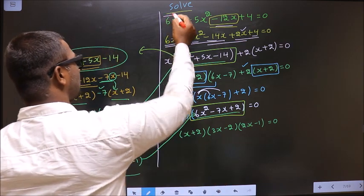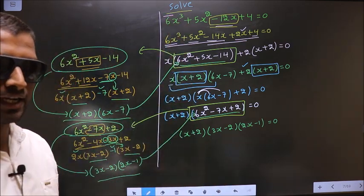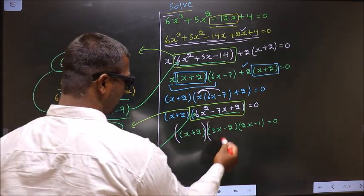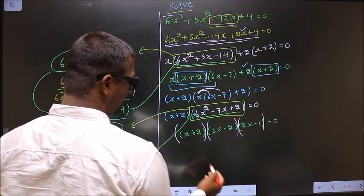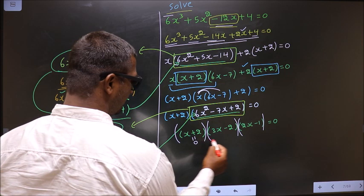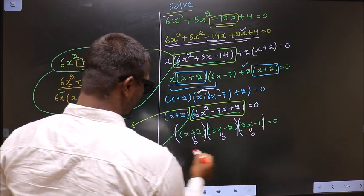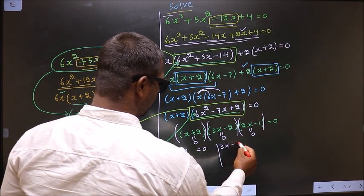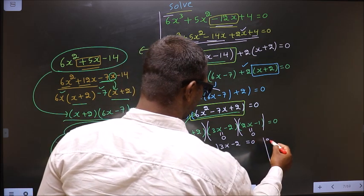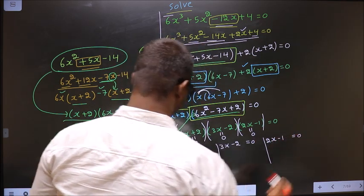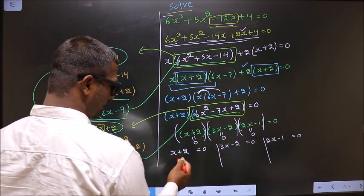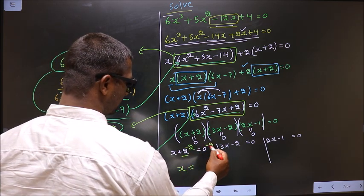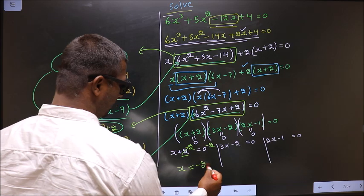They told us to solve, so we should get the values for x. I got a product of brackets equal to 0. To get the values for x, I should equate each bracket to 0: x + 2 = 0, 3x - 2 = 0, and 2x - 1 = 0. For x + 2 = 0, I subtract 2 from both sides; it cancels out and I get x = -2.